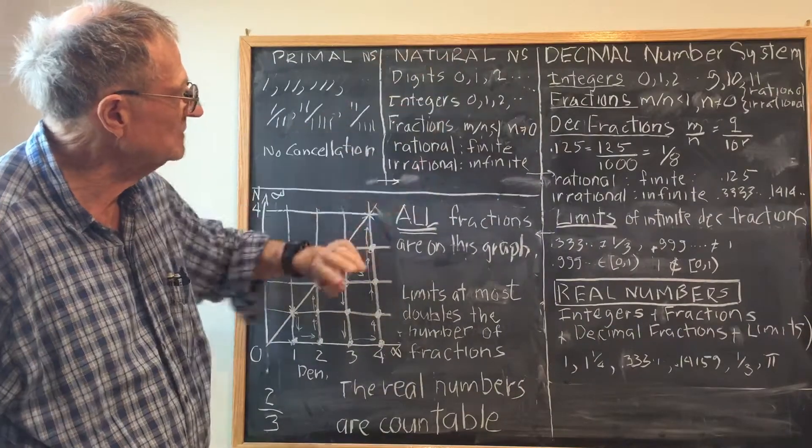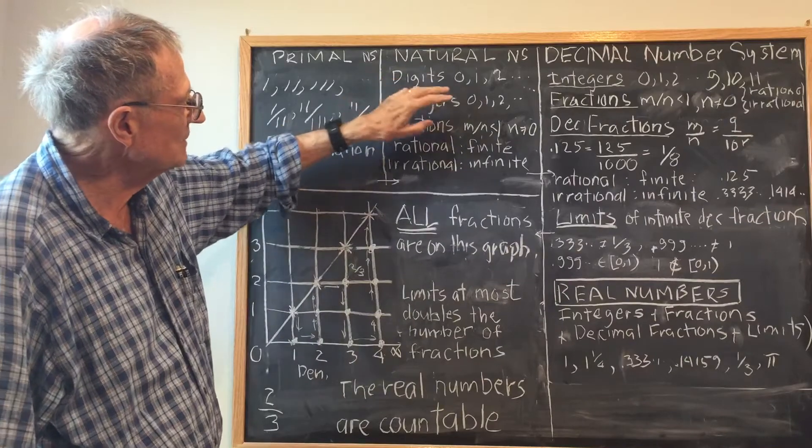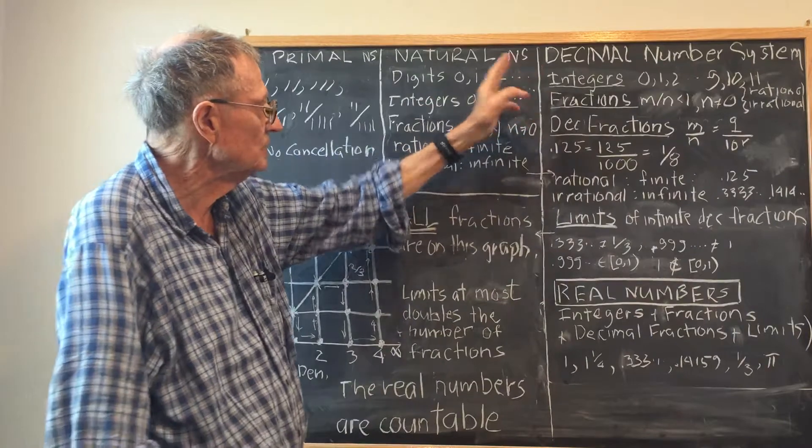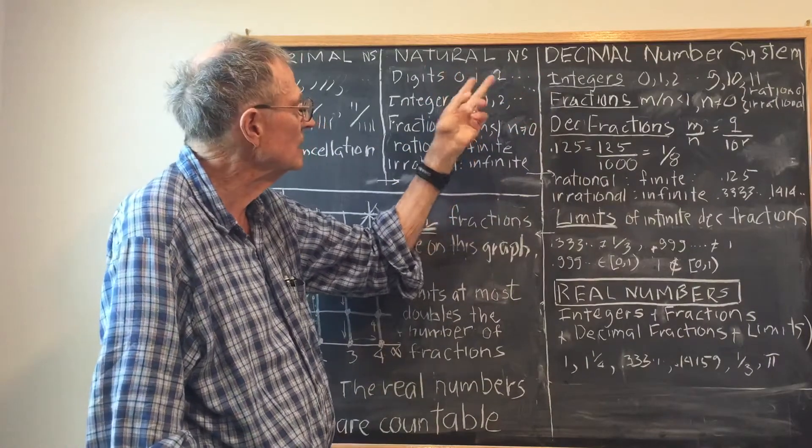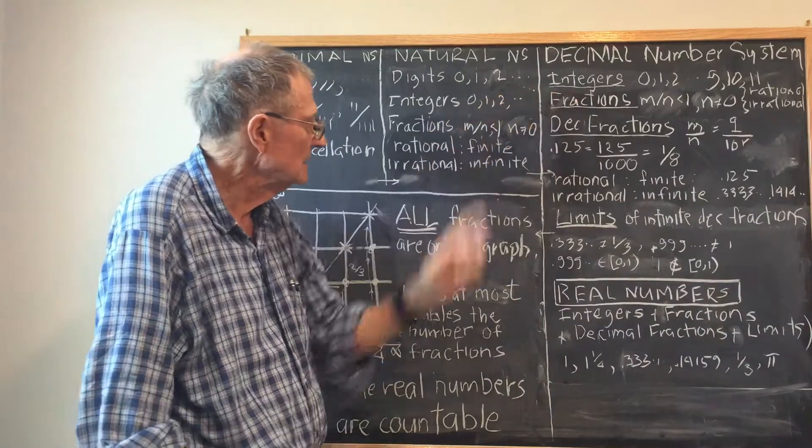Then we have the natural number systems, which developed from the concept of digits 0, 1, 2, and I haven't shown the last one because you can have a natural number system with any number of digits: 3, 4, 5, etc., k.